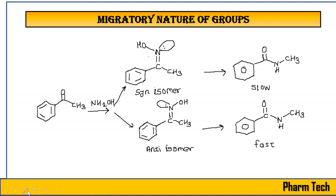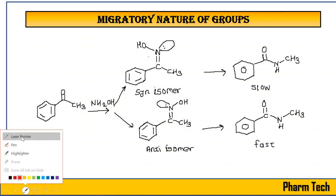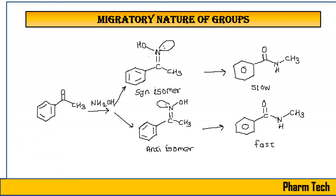So from this we can indicate that when phenyl migrates we get one product with a phenyl group on one side, and when methyl migrates we get a product with a CH3 group. This tells us that the migration of groups is one of the factors which affects the product formed in Beckmann Rearrangement.